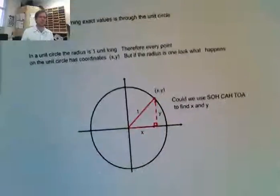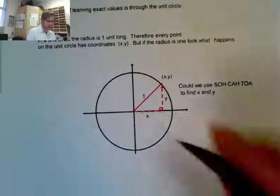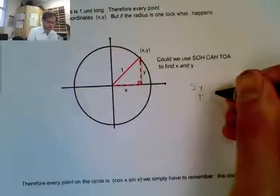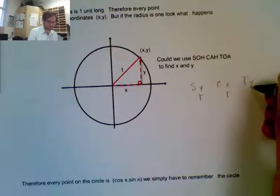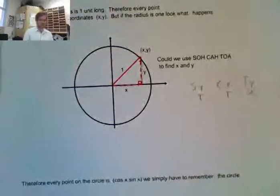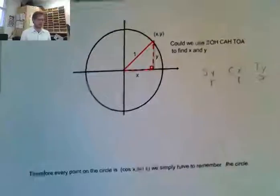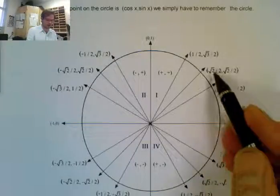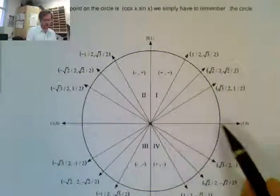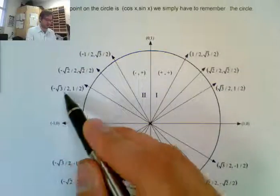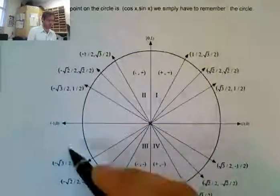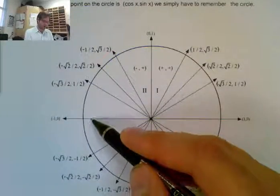Always remember: my x value is always my cosine, and my y value is always my sine. Our famous mnemonic is Sir Cox or Tix: sine refers to y, cos refers to x, and tangent is y divided by x. The unit circle completed has x decreasing (√3, √2, √1) over 2 going left, and y decreasing going down, with the same pattern reflected into the other quadrants based on reference angles.